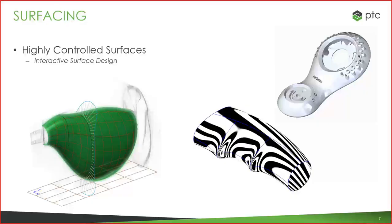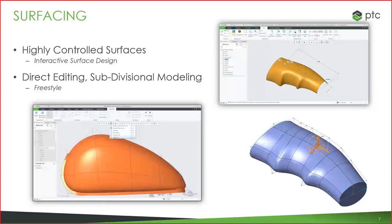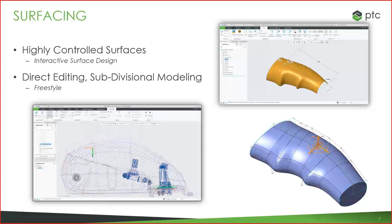Surfacing is an area in Creo where we have a lot of different options. We don't require you to be a surfacing expert to create highly controlled yet very interactive surfaces. Our interactive surface design combines the organic feel from freeform modeling with the parametric control you often need. We also have a more freeform, subdivisional modeling style, useful if you want to create more lifelike surfaces without having to dimension every detail of the model.